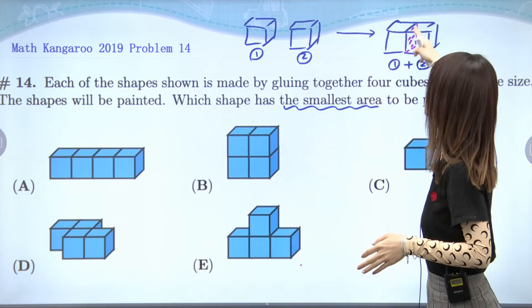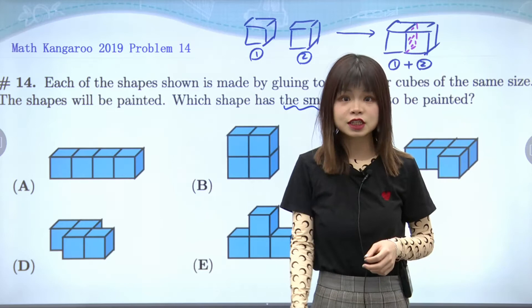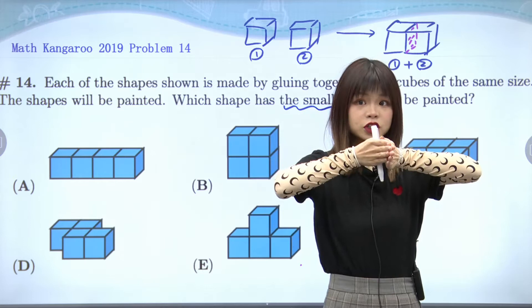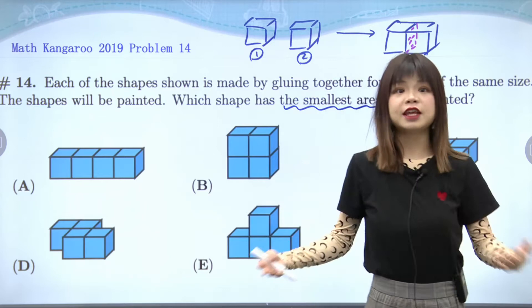We actually call these two faces a pair of kissing faces. When we have one pair of kissing faces, we will have two hidden faces. So remember: when two cubes are connecting with each other, we will have two hidden faces.